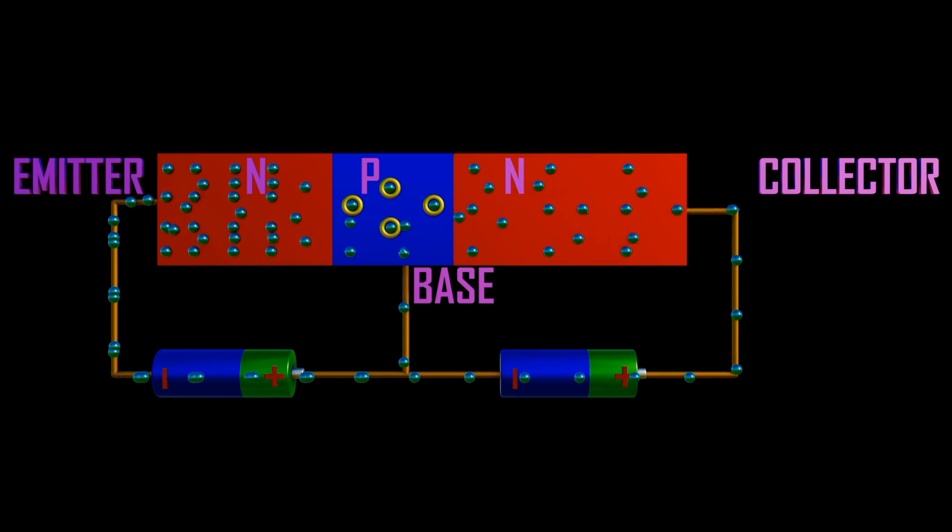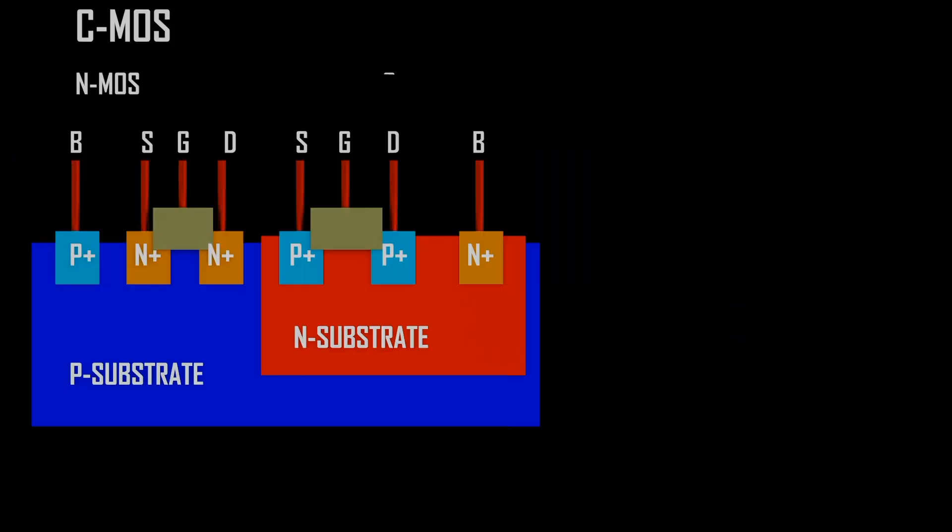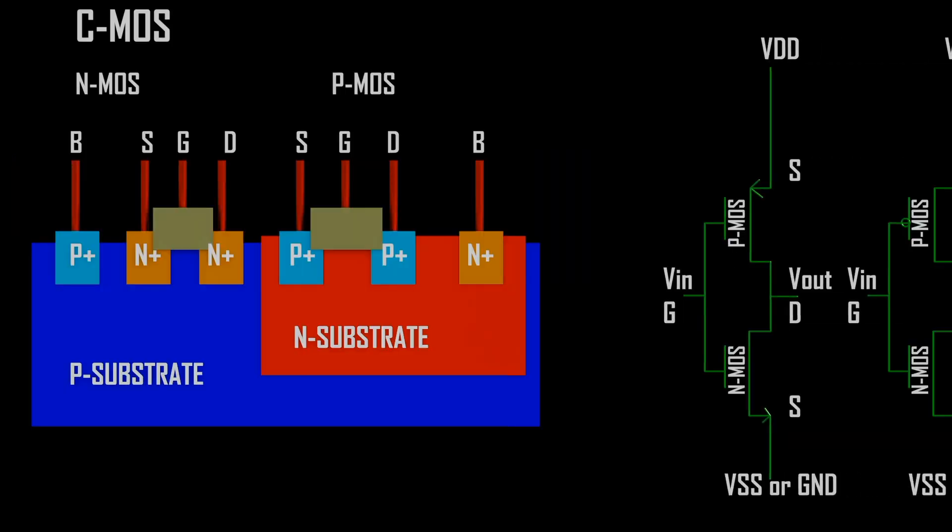The transistor contains three terminals: either emitter, base, and collector, or source, gate, and drain.